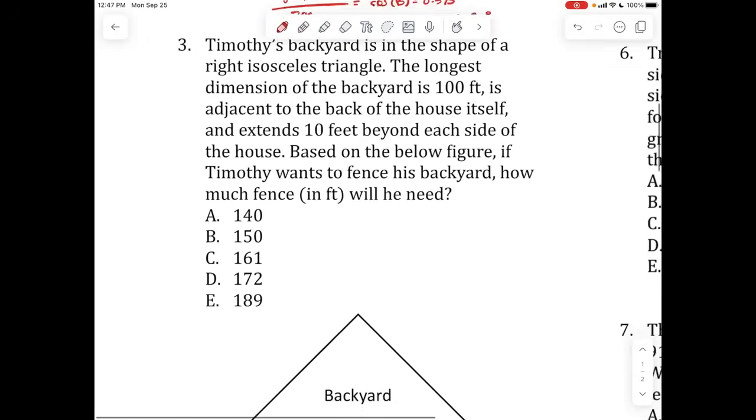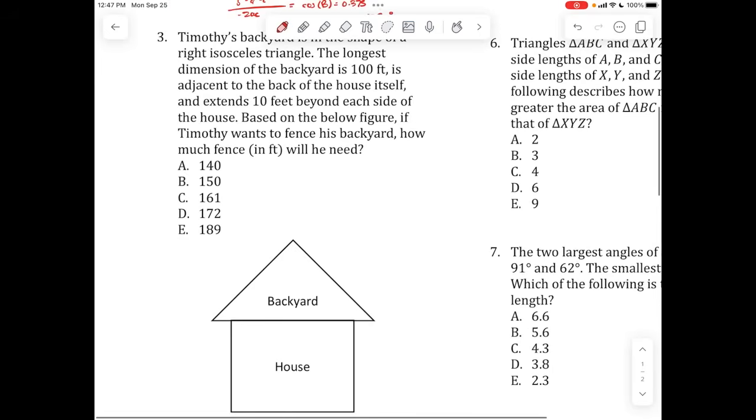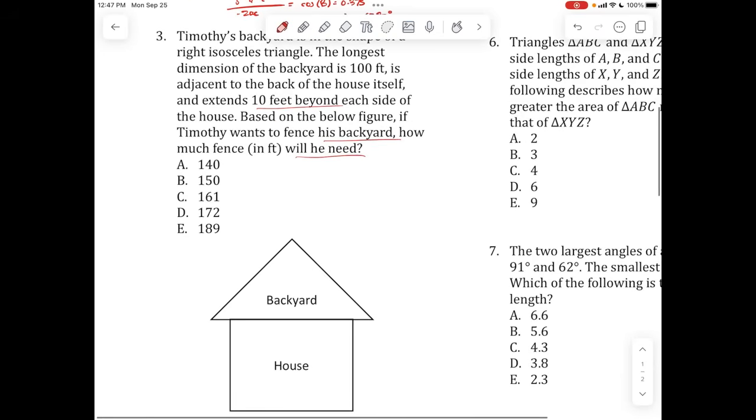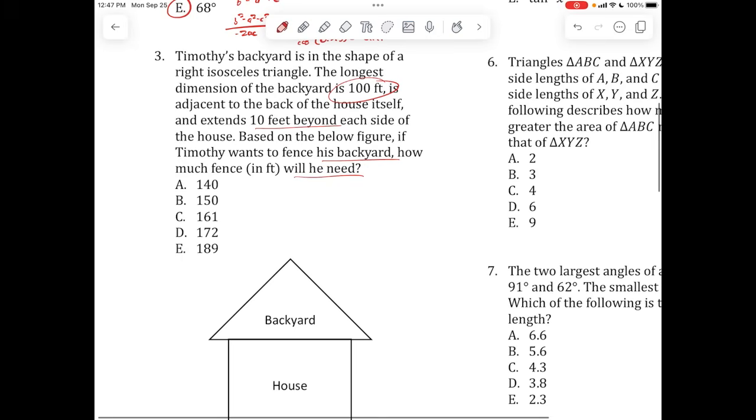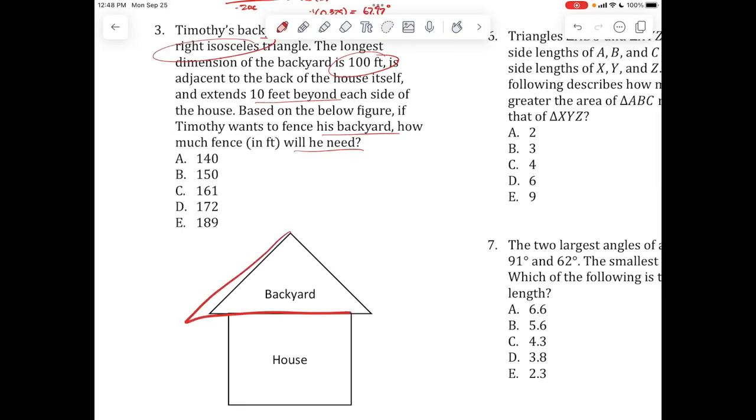Timothy's backyard is in the shape of a right isosceles triangle. The longest dimension of the backyard is 100 feet. It's adjacent to the back of the house itself and extends 10 feet beyond each side of the house. Based on the below figure, if Timothy wants to fence his backyard, how much fence in feet will he need? There's a lot of information here. Right isosceles triangle means that it's a right triangle, that's going to be 90 degrees. And then isosceles means the hypotenuse is the longest side as always, but the two other sides are same in length. So if this is X, this is X. The dimension of the backyard is 100 feet. That's the hypotenuse. And it extends 10 feet beyond each side of the house. So this is 10, this is 10.